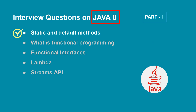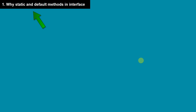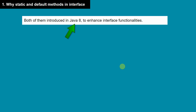We are going to see interview questions on Java 8, and in this video we are going to cover static and default methods in interface. This is going to be part one. The first question is: why are static and default methods introduced in interface?